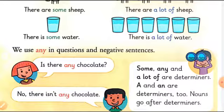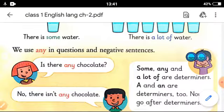Nouns go after determiners. 'A' and 'an' are determiners — they are used for one item only.